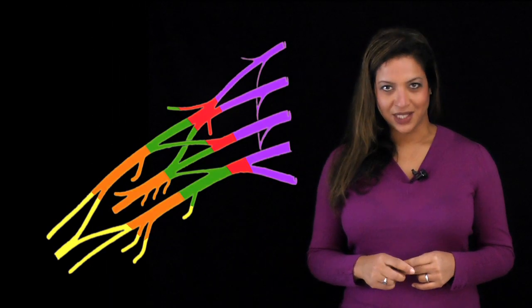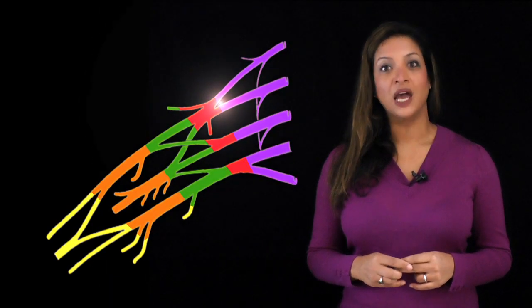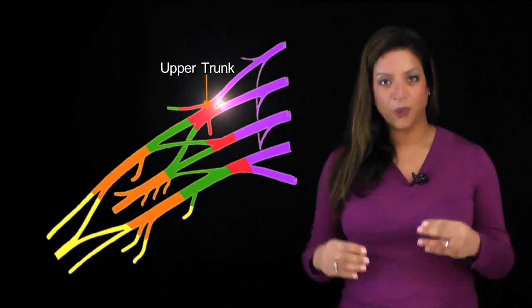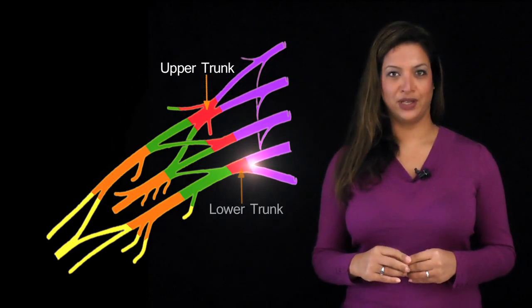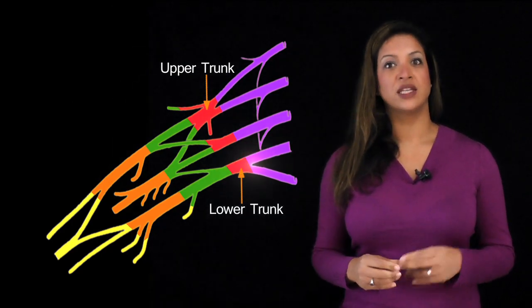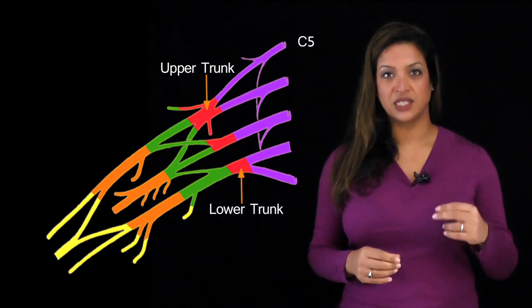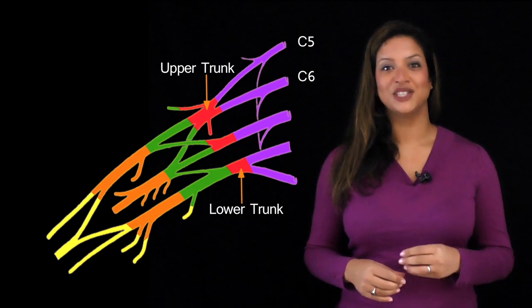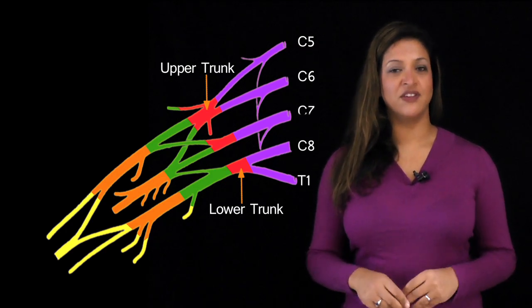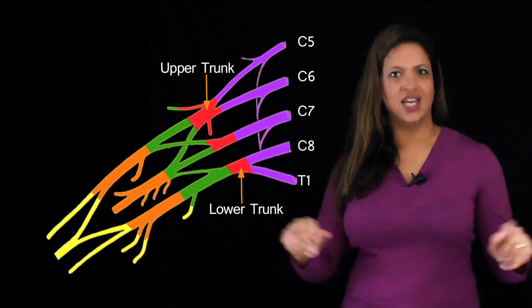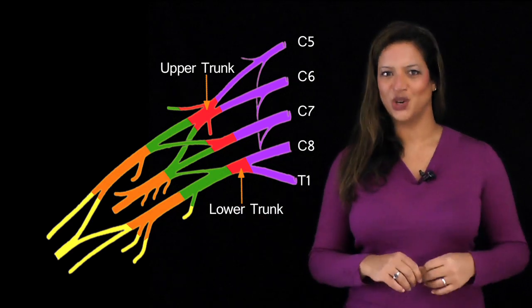So how do we get from the roots to the chords? The top two roots unite to form the upper trunk, and the bottom two roots unite to form the lower trunk. So C5 and C6 form the upper trunk, C8 and T1 form the lower trunk, and C7 is just fine on its own.